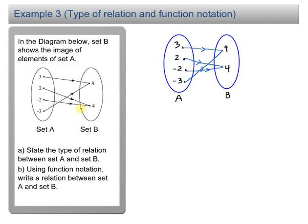So we're going to look at this example. Again, this is a pretty straightforward example. Part A now, we have to find the type of relation.